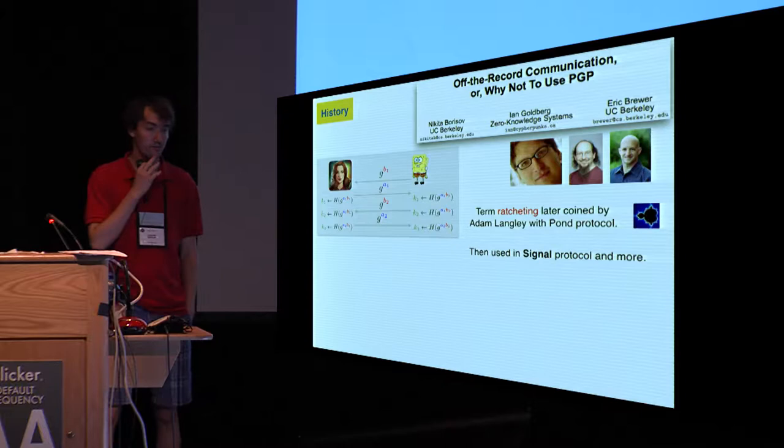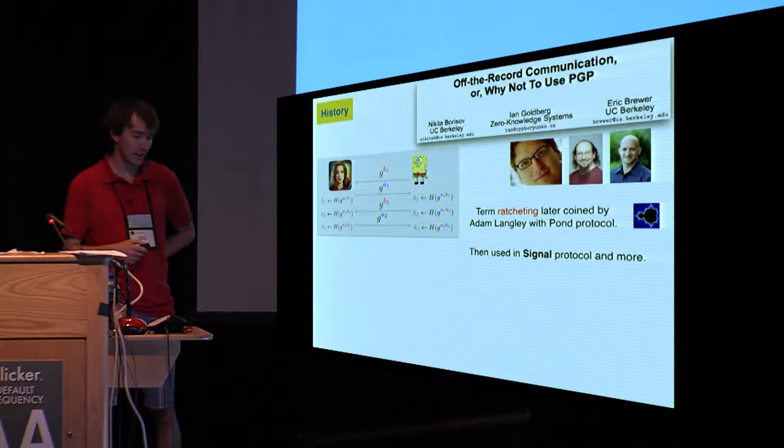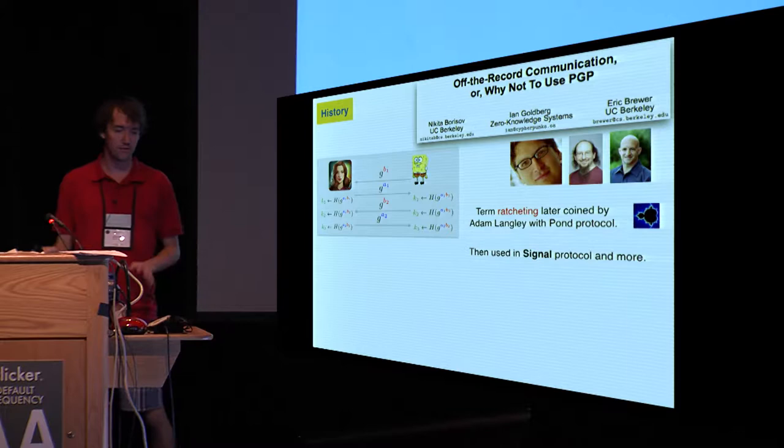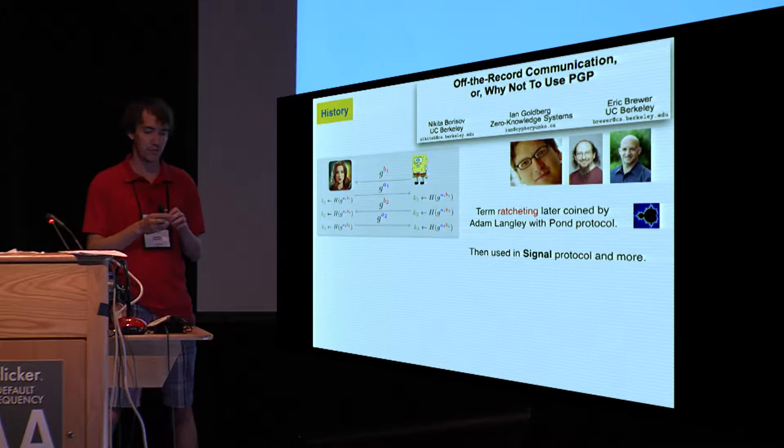Some quick history. The techniques underlying ratcheting were originally used in this paper by Borisov, Goldberg, and Brewer in which they introduced the off-the-record communication system. This picture gives kind of a quick sketch of roughly how the ratcheting works there. They use a Diffie-Hellman group together with a hash function to update the keys over time. The term ratcheting itself didn't come until later with Adam Langley and the Pond protocol.